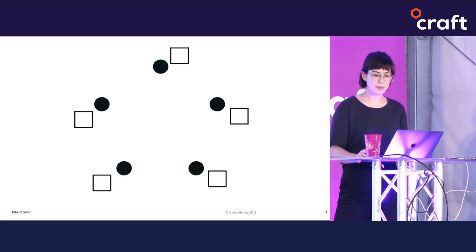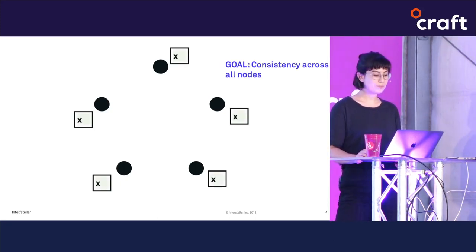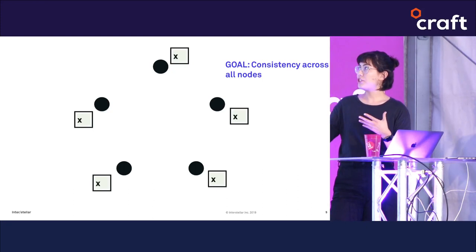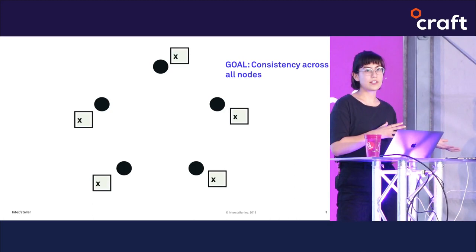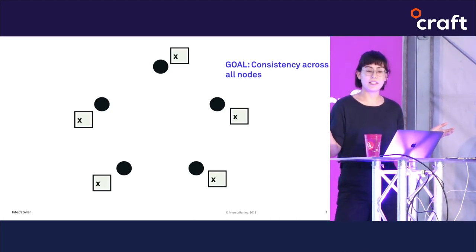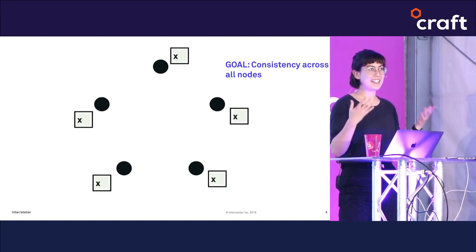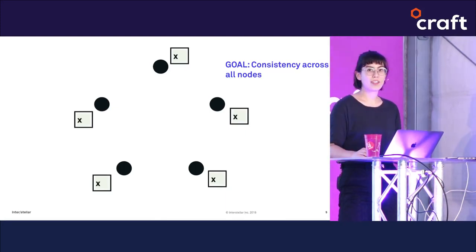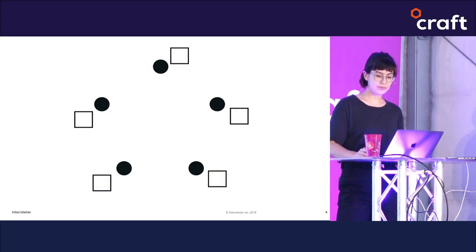Today I hope to give you a sense of what the consensus problem is and how it can be solved. Let's begin from first principles. We can imagine a system with five nodes where all nodes can talk to each other, each node has a slot for a value, and we want all the nodes to choose the same value for that slot.